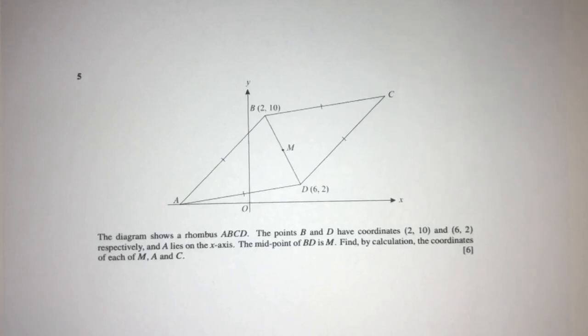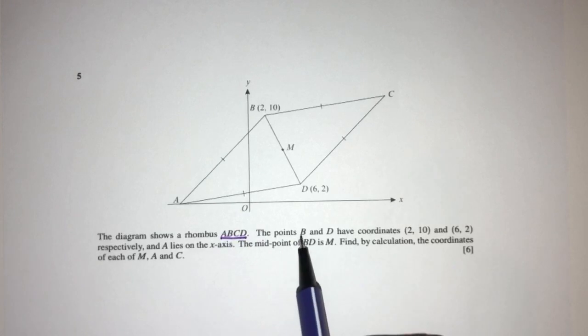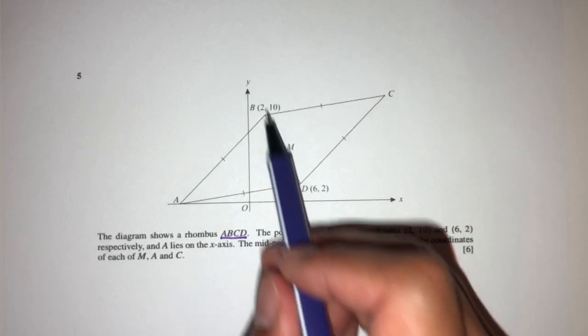Now let's move on to the next question. The diagram shows a rhombus A, B, C, D. The points B and D have the coordinates 2, 10, and 6, 2, as we can see right here.